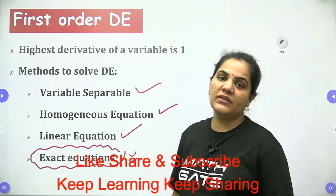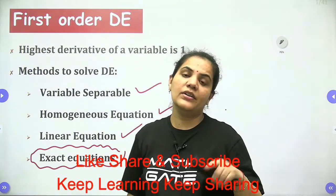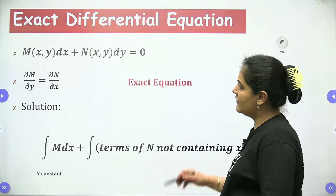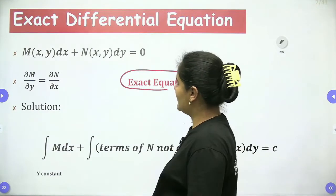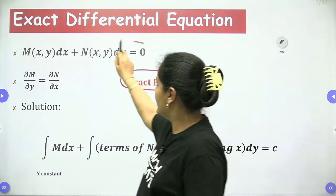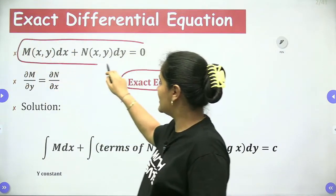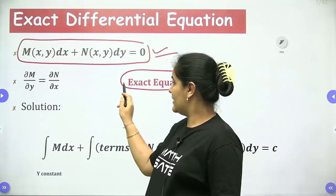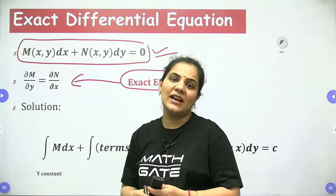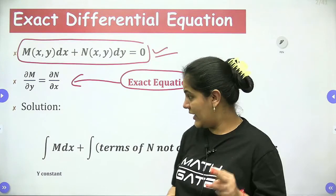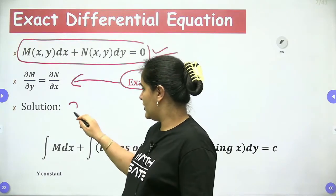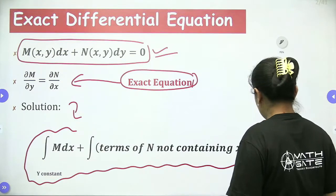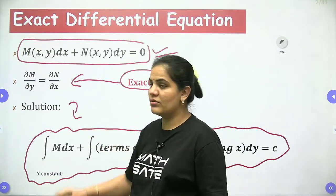In this lecture we are going to start with non-exact or reducible to exact differential equations. Recall that any differential equation is said to be exact if it is of the form M dx + N dy = 0, the condition for exactness is ∂M/∂y = ∂N/∂x, and the general solution is ∫M dx + ∫N dy = c.